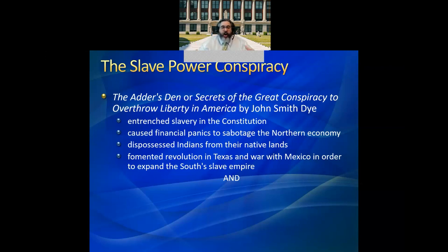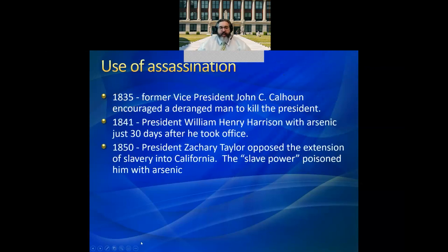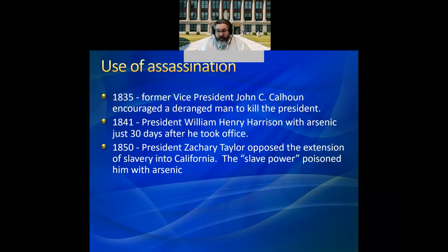These things are not a hard sell because there is an actual connection between a lot of this stuff. What's controversial is how Dye argued they got their way. He argued that slaveholders used assassination and violence as a tool. For example, in 1835, slave power conspiracy advocates held that John C. Calhoun had encouraged a man to kill President Andrew Jackson, because Calhoun and Jackson didn't see eye to eye on nullification.